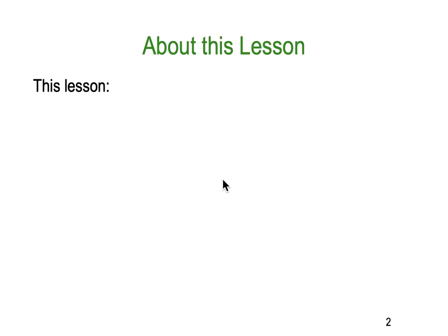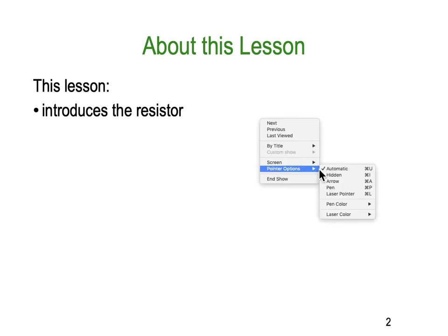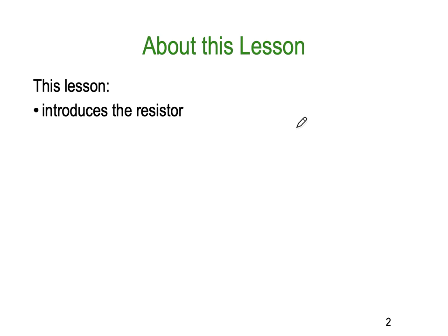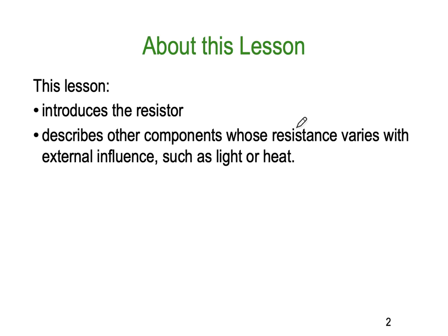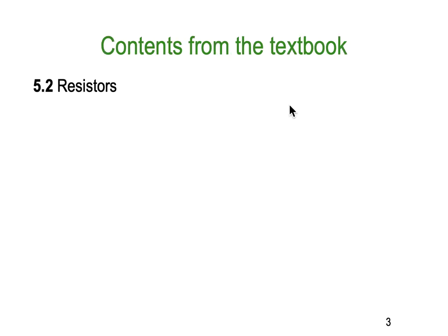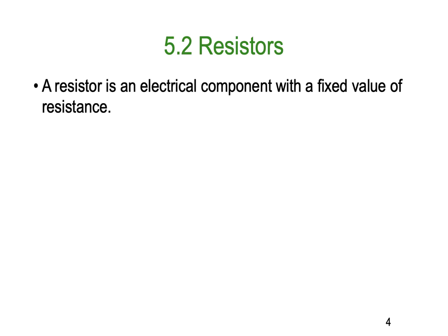In this lesson we're looking at an introduction to resistors. In the previous lesson we looked at what resistance is and the four factors that affect resistance. In this lesson we're going to look at the different kinds of resistors made for particular purposes in electrical work. We'll describe components whose resistance varies with external influences such as heat and light. If you're using the textbook, we're on section 5.2 of Electrical Principles by Philips.